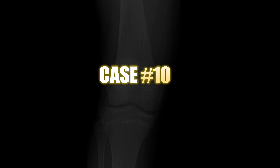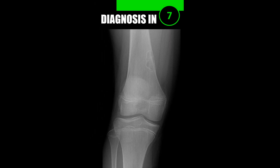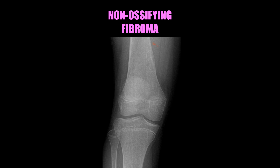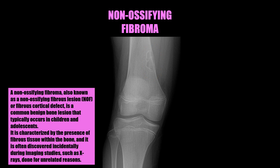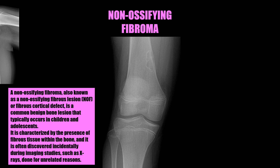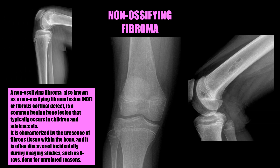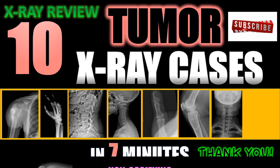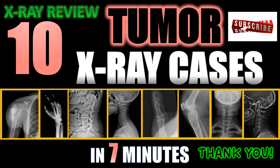Case number ten: this eccentrically located geographic soap bubbly lesion represents a non-ossifying fibroma. A non-ossifying fibroma is a common benign bone lesion that typically occurs in children and adolescents. It's characterized by the presence of fibrous tissue within the bone and is often discovered incidentally during imaging studies such as X-rays done for unrelated reasons. Thanks for listening and hope you enjoyed. If you did, don't forget to like and subscribe, and any questions or comments please put them below.